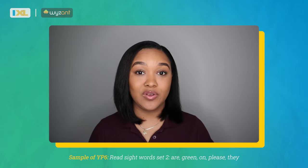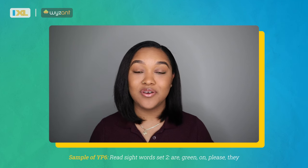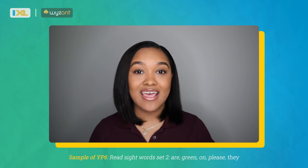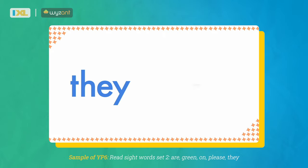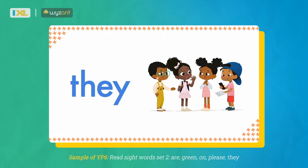Some words come up a lot when you read. Let's learn them well so you can read them quickly. Today we are going to learn 5 of these words. This is the word they. They are talking. Look at the letters in this word. The word starts with the letters TH. Together, these letters make the TH sound. The letters EY make the A sound in this word. When you blend those sounds together, you get the word they.